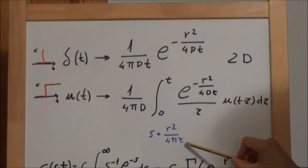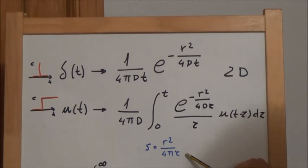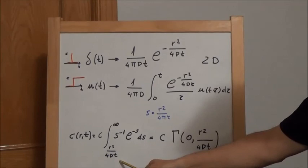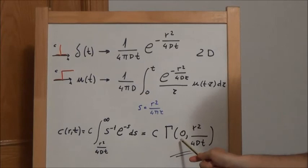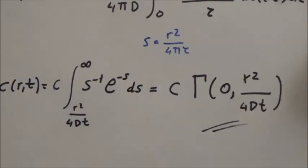In order to solve this integral we have to make this change of variable and doing this it can be shown that the solution can be expressed like this, which is what is called the upper incomplete gamma function for zero and this coefficient.